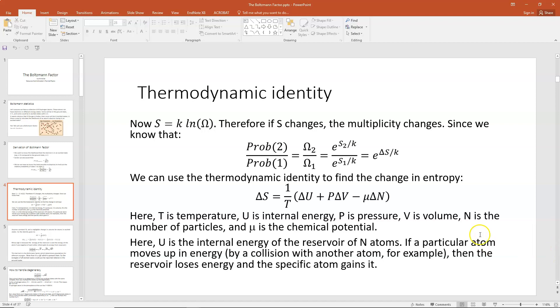So that means omega_2 would be e to the S_2/k and omega_1 would be e to the S_1/k. If we take the ratio of those two things, then we would end up with e to the delta S over k, because when you divide exponents, it's the same thing as subtracting. So it would be e to the power of S_2 minus S_1 divided by k.